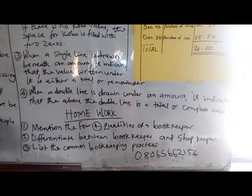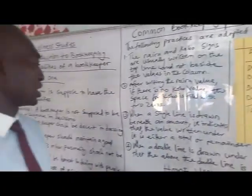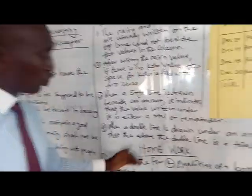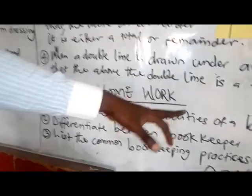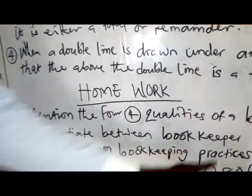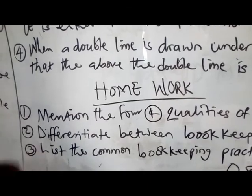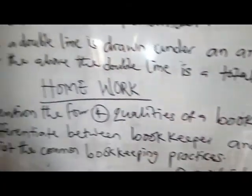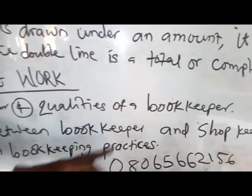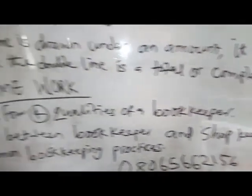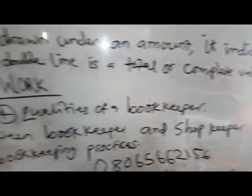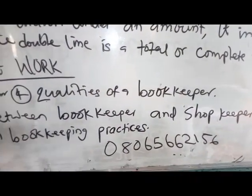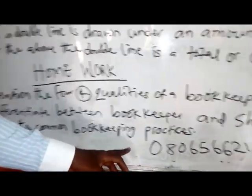This is where we are going to stop for today's lesson. When we meet next, we will continue from where we stopped. Here are your homework assignments: number one, mention the four qualities of a bookkeeper; number two, differentiate between a bookkeeper and a shopkeeper; and number three, list the common bookkeeping practices you know.